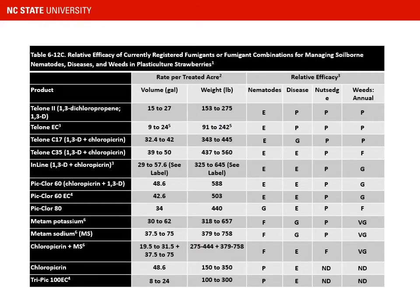Looking at the table of fumigants available, most products currently in use are some combination of 1,3-dichloropropene and chloropicrin. Those seem to be the most efficacious materials — if you look at the columns for relative efficacy for nematodes, diseases, nutsedge, and weeds, most products rated E for excellent or G for good are a combination of Telone and chloropicrin. For nutsedge, there's just not much to do other than avoiding sites that have nutsedge, since nutsedge will grow right through black plastic mulch.